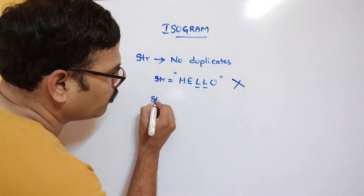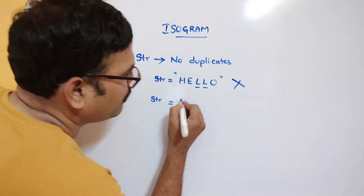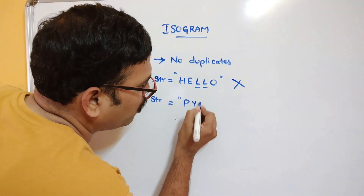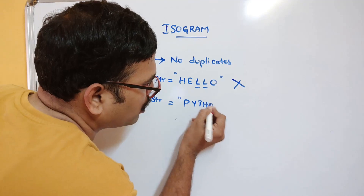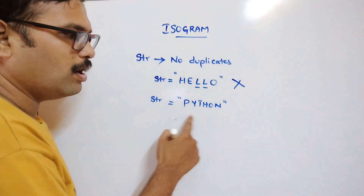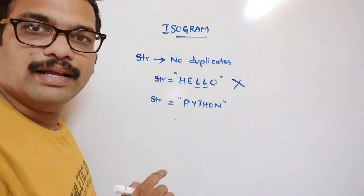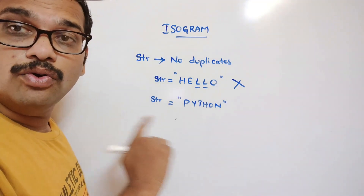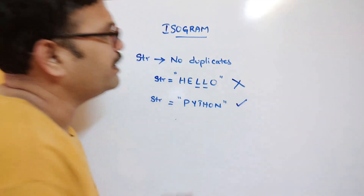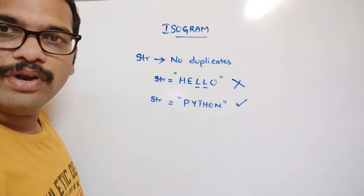Take one more example: 'Python'. Here you can see all characters are individual — there is no duplicate. So we call it an isogram.